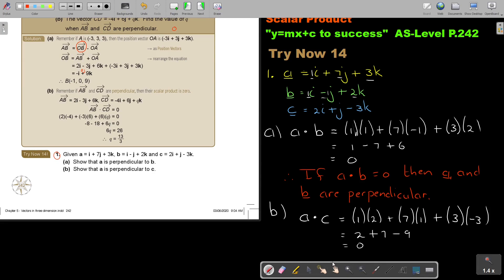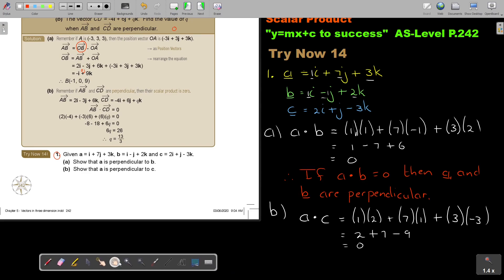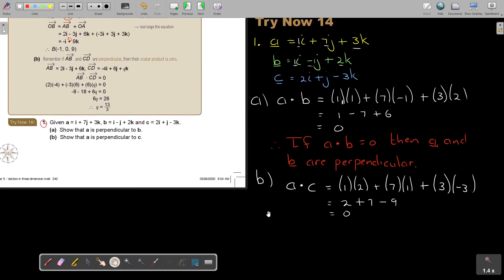Now, ending exactly the same, I'm saying, therefore, if A dot C, scalar product is 0, then A and C are perpendicular.